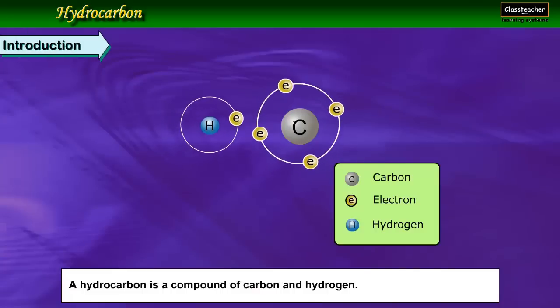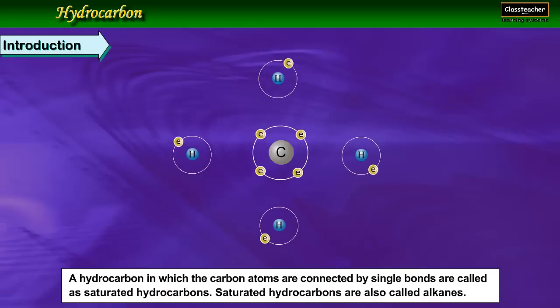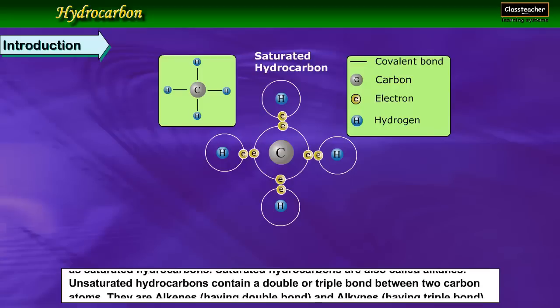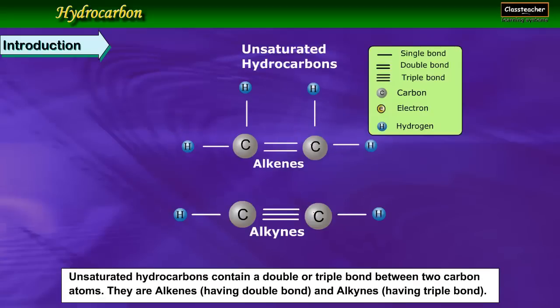Hydrocarbons introduction. A hydrocarbon is a compound of carbon and hydrogen. A hydrocarbon in which the carbon atoms are connected by single bonds are called saturated hydrocarbons. Saturated hydrocarbons are also called alkanes. Unsaturated hydrocarbons contain a double or triple bond between two carbon atoms. They are alkenes having double bonds and alkynes having triple bonds.